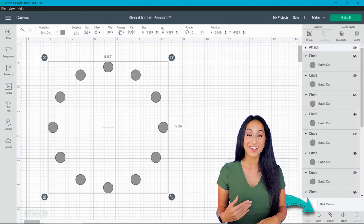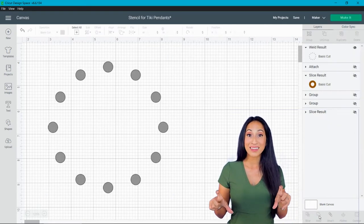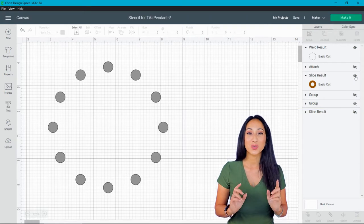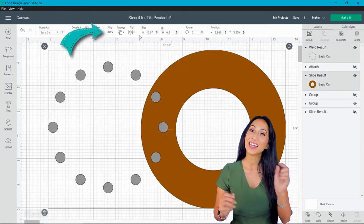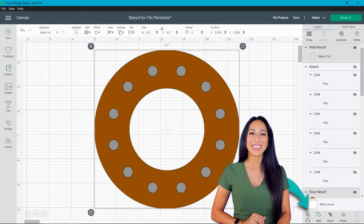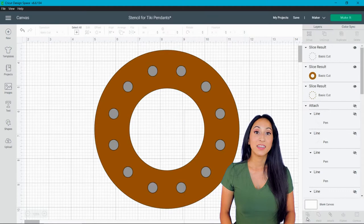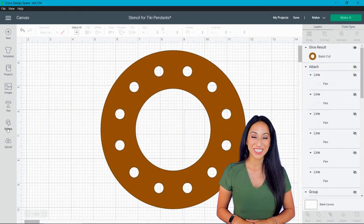Now the reason why we're welding it and not attaching is because once you weld something, it becomes permanent and you're able to slice. So now we can select our big circle and all the little holes, click center to center, and then hit slice. Then you can delete the excess on those because you just want those empty holes on your main stencil.